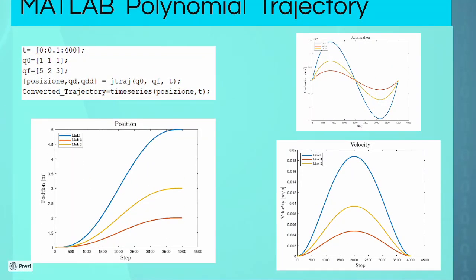We can play with many commands, thanks to the Peter Corke toolbox. For instance, we can use the jtraj command, which implements a fifth-order polynomial.